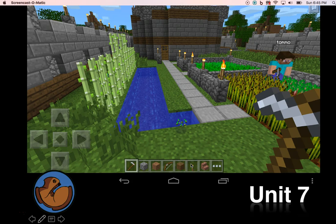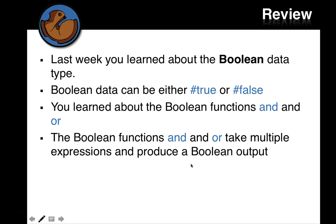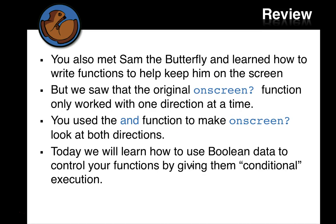Welcome to Unit 7. Last week you learned about the Boolean data type, and you learned that Boolean data can either be true or false. You also learned about Boolean functions and and or. The Boolean functions and and or take multiple expressions and produce a Boolean output. You also met Sam the Butterfly and learned how to write functions to help keep him on the screen. We saw that the original on-screen function only worked in one direction at a time. You used the and function to make on-screen look at both directions. Today we will learn how to use Boolean data to control your functions by giving them conditional execution.